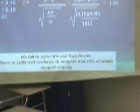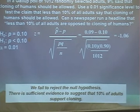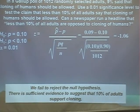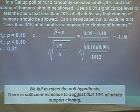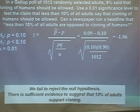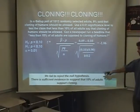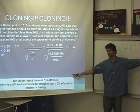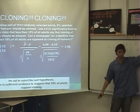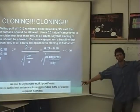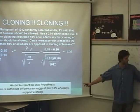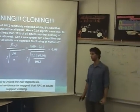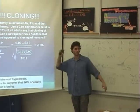There is sufficient evidence to suggest that 10% of adults support cloning. So we fail to reject it, the evidence... you can say two things. You can say the evidence does not support it, or that the evidence supports the null. We can say that the evidence supports the null, that P is equal to 0.10. Or we can say that the evidence does not support the fact that P is less than 0.10. Those two things are saying the exact same thing.